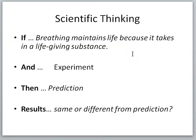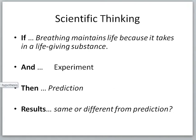In science, hypotheses are tested by experiments, and the results can either support or weaken the hypothesis. Any hypothesis that can be weakened by evidence is said to be falsifiable. Today's scholars criticize Anaximedes for producing a hypothesis that is not falsifiable. For his hypothesis to be falsifiable, there must be some possible observation that could weaken it. Unfortunately, there is nothing we could discover that would weaken his hypothesis that breathing maintains life because it takes in a life-giving substance.